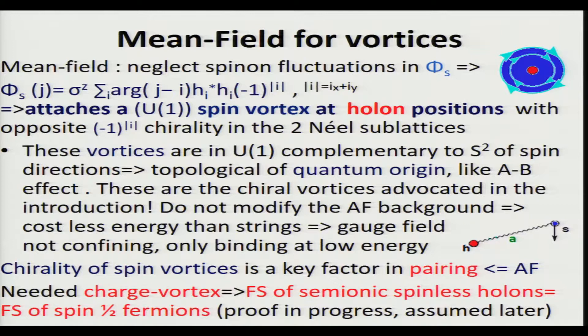The chirality of the spin vortices is a key factor for the pairing, and it's due to antiferromagnetism. As in one dimension, you need a charge vortex too, and then you get the same effect: the Fermi surface of semionic spinless holons is equal to the Fermi surface of spin-1/2 fermions. So you get the original tight-binding Fermi surface as a starting point. We have, not yet published, but a working rigorous proof of this.